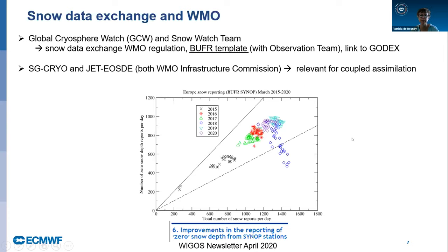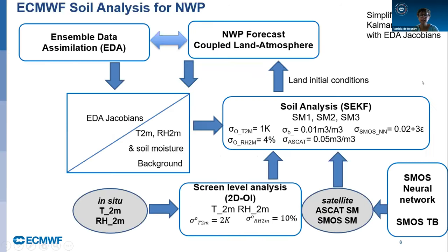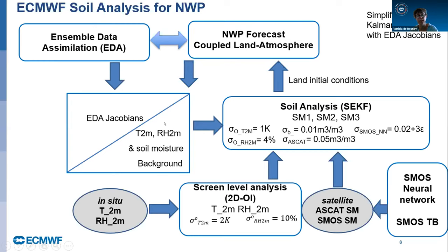There is a WGOS newsletter article on this. Regarding soil moisture data assimilation, this is a schematic illustration of how it works at ECMWF. We use a Simplified Extended Kalman Filter (SEKF), shown in the middle. At the bottom we see the observations: we use in-situ two-meter temperature and relative humidity, which provides a proxy for soil moisture with an a priori two-dimensional optimal interpolation, and we use ASCAT scatterometer soil moisture with a neural network retrieval approach. The SEKF output provides the initial condition to the coupled land-atmosphere forecast. We also use our ensemble data assimilation to compute the Jacobians of the SEKF, and the coupled forecast provides the background information for two-meter temperature, relative humidity, and soil moisture.